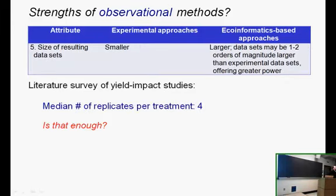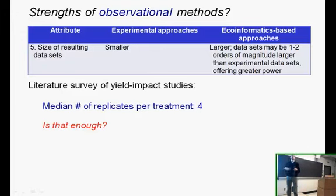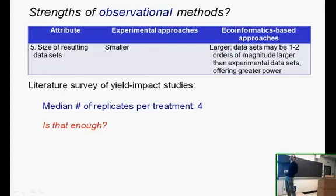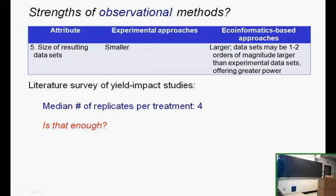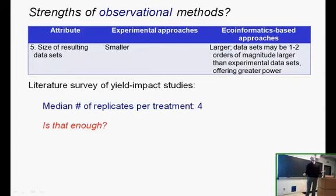Finally, a last advantage has to do with statistical power — just how large are the data sets going to be. For experimental approaches, data sets are generally fairly small because we're constrained by how much data we can actually collect ourselves. With ecoinformatics approaches, we can potentially get much larger data sets because of the decentralization of the labor-intensive work of sampling, and that holds out the promise of having greater power. So we wanted to look at this issue more carefully with our literature review. We saw that in the studies we surveyed, there was a mean number of replicates per treatment of four — the median value. And the question was: is that enough? Is that really going to give us sufficient power?